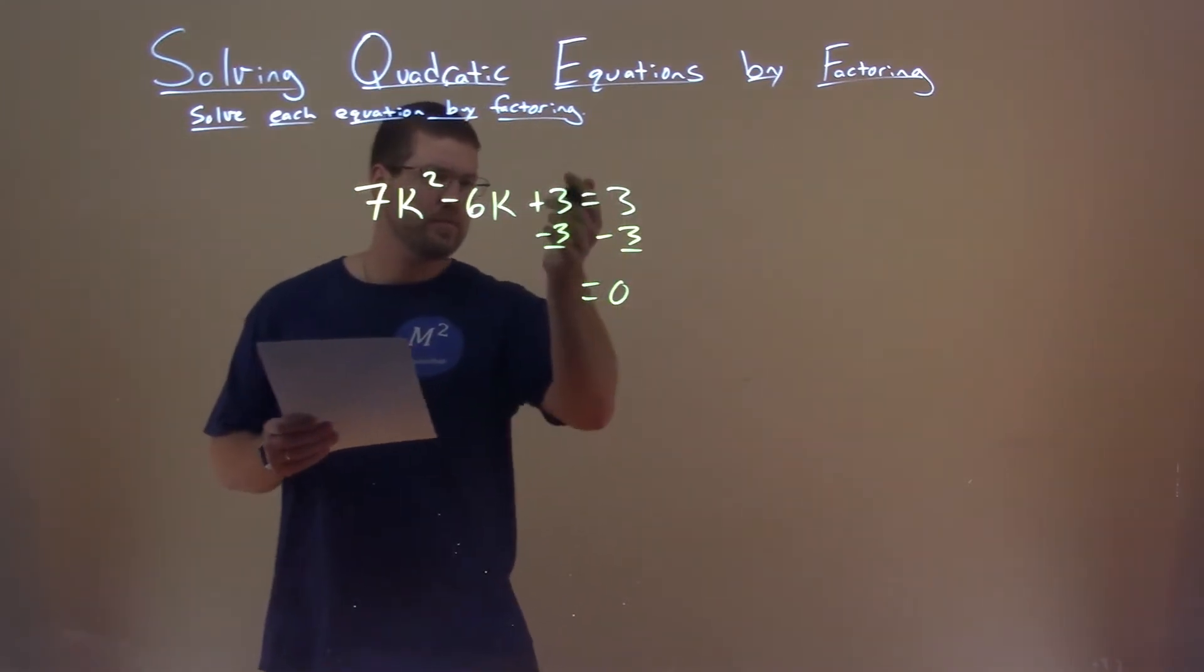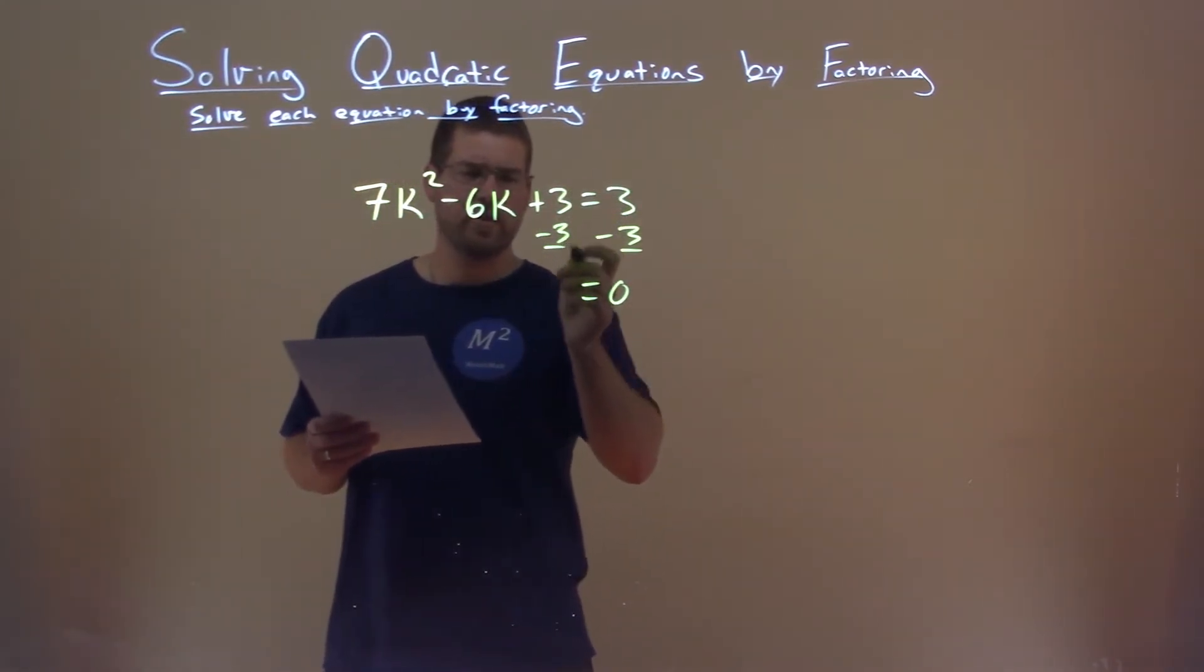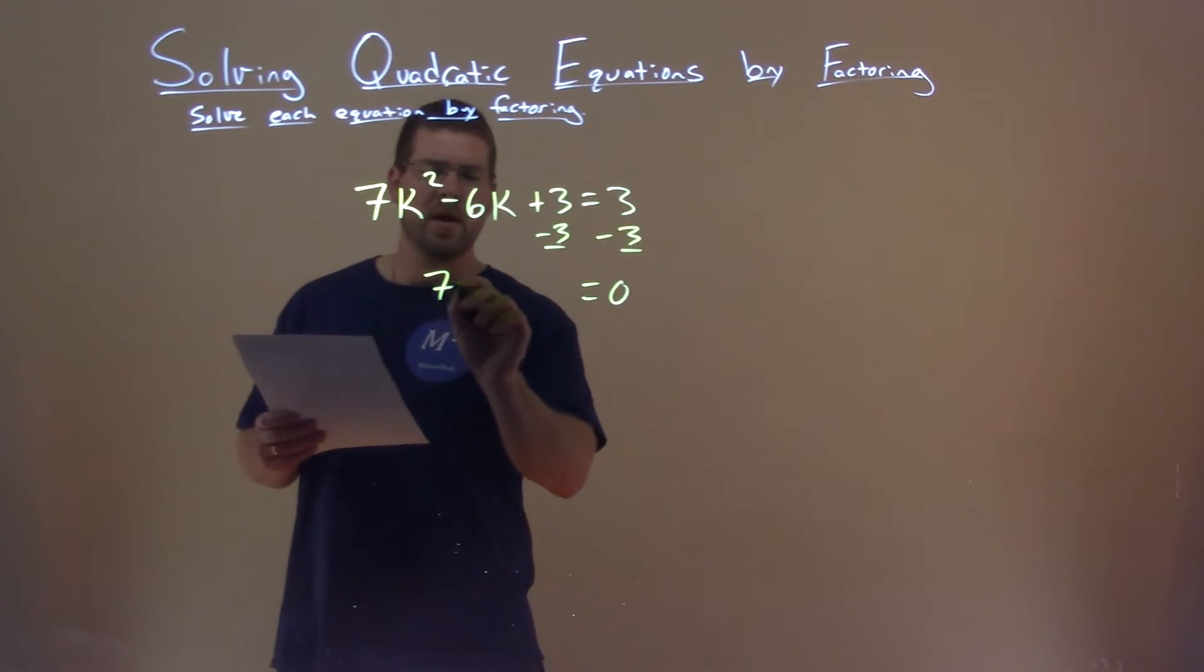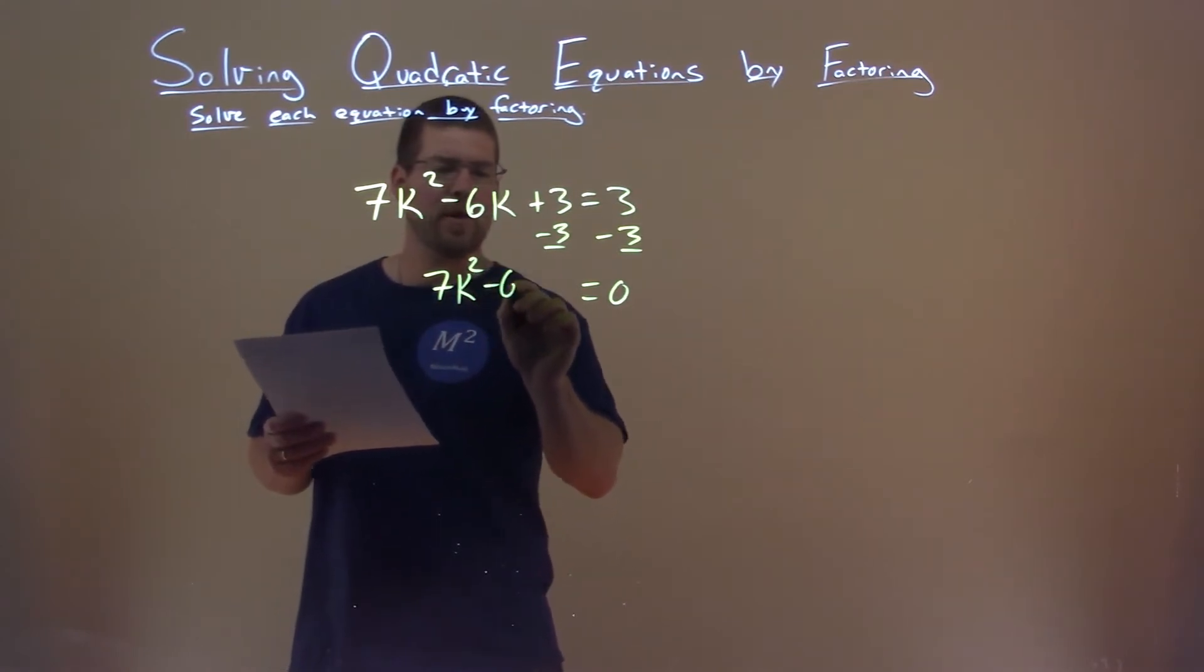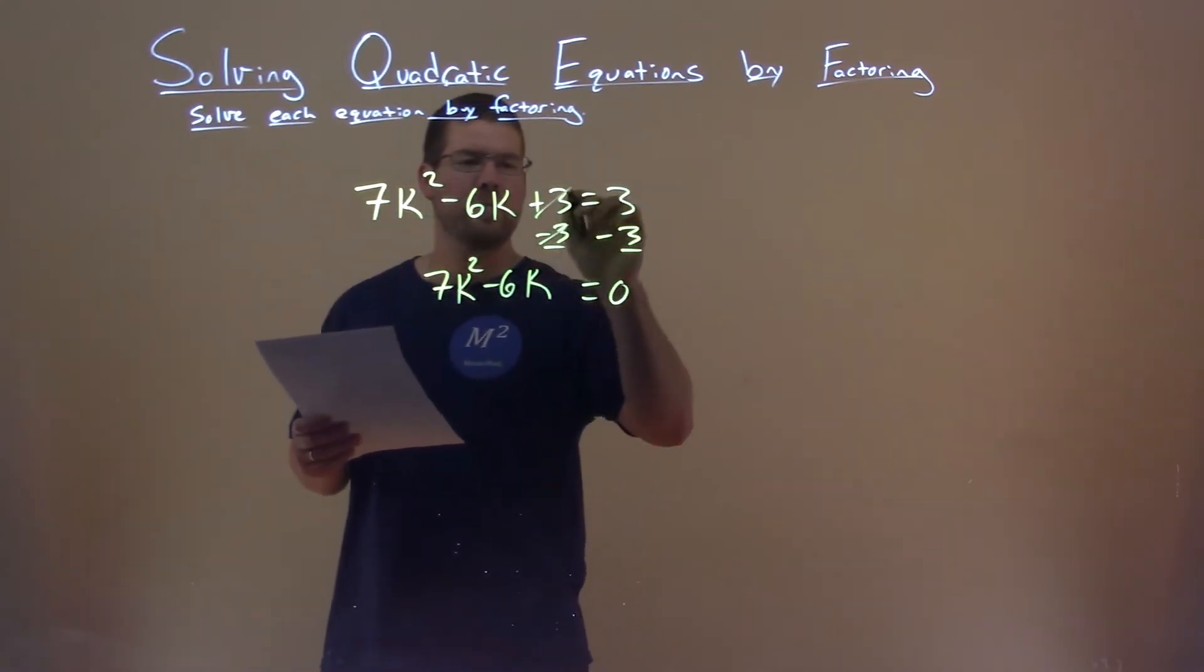Okay, 3 minus 3 is 0, and 3 minus 3 is also 0, don't need to write that. So we just bring down 7k squared minus 6k. Remember, these cancel.